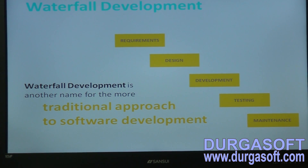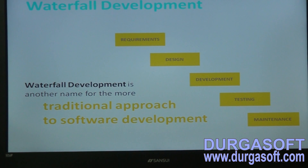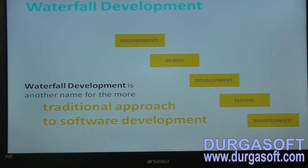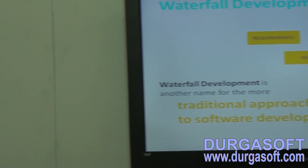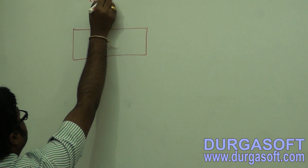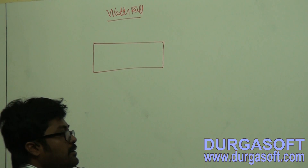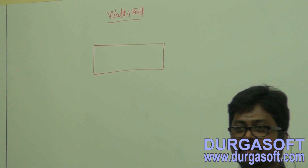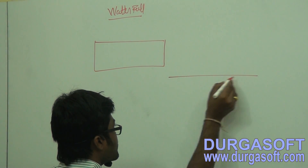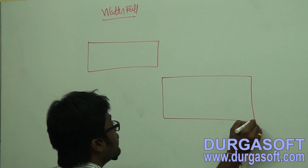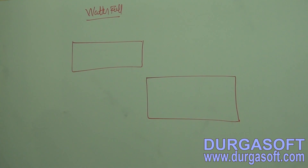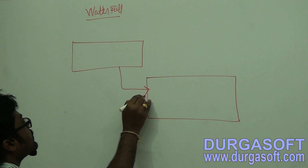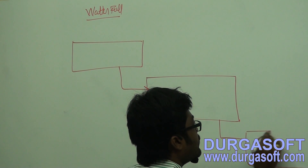This one is the traditional waterfall model. In the waterfall model, also known as the traditional approach for software development, we have five levels. This model suggests how many levels we need to use while building a project. So here we have five levels.